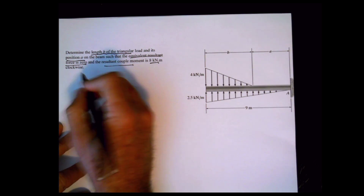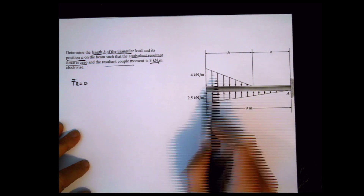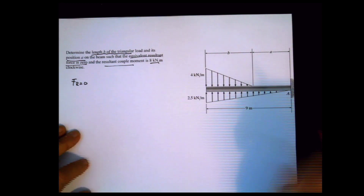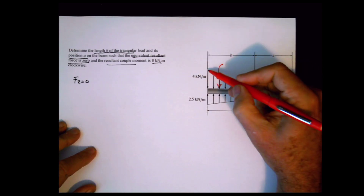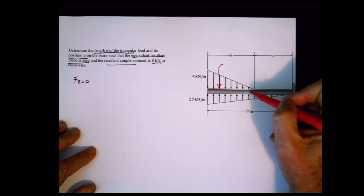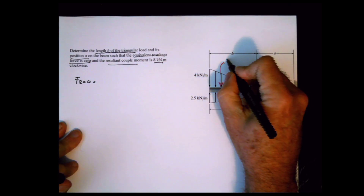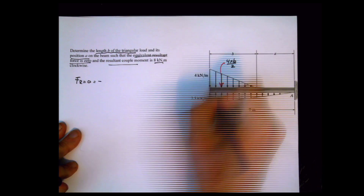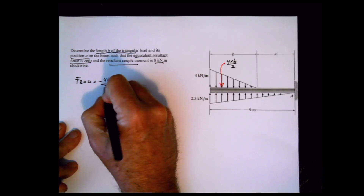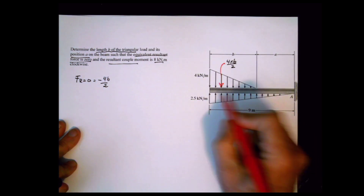If we know the equivalent resultant force is zero, and we know the resultant force comes just from these two forces, we can calculate those forces. What is the value of this force? Just the area of the triangle — the area of the triangle is 4b divided by 2. It's a negative force because it's pointing downward, so negative 4b divided by 2. The resultant of this other force is going to be 2.5 times 9 divided by 2.